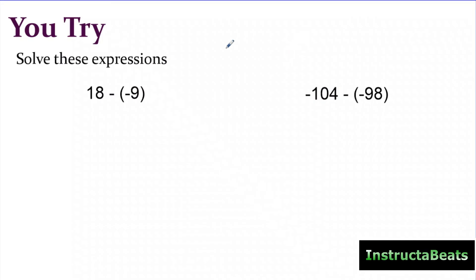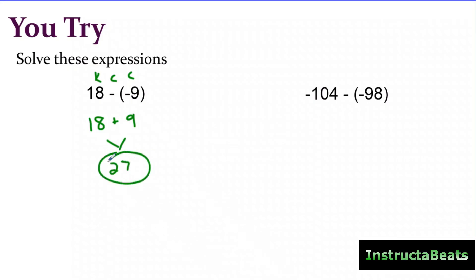Hopefully you just tried it and now you're checking your work. The first thing I want to do is keep change change. So I'm going to keep this the same, change this to positive, and then change this to the opposite, which is also positive. So for this one I'm going to be doing 18 plus nine, which is going to be 27. Keep change change is another way for you to remember adding the opposite. If you want to, you can label it above the problem and that will help you remember the steps.